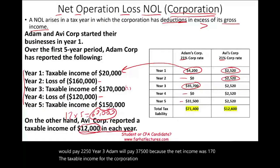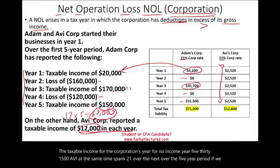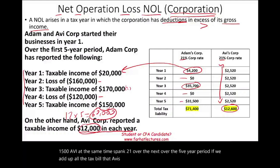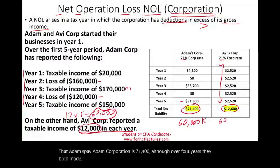Year four, Adam has no income. Year five, Adam pays $31,500. Avi is paying 21% over the five-year period. If we add up all the tax Avi pays, it's $12,600. If we add up Adam Corporation's tax bill, it's $71,400 — although over five years they both made $60,000.